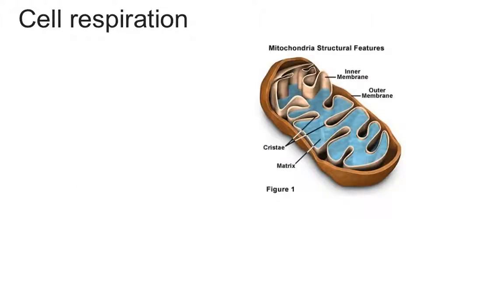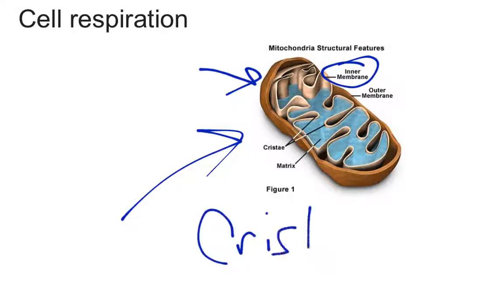Most of respiration happens within the mitochondria. It has several parts: an outer membrane, an inner membrane which we call the cristae, and fluid on the inside called the matrix. Different parts of cellular respiration occur in different parts of the mitochondria, so it's important we know those parts.